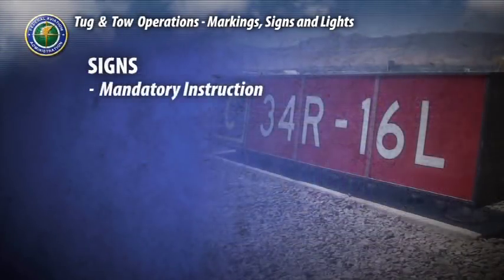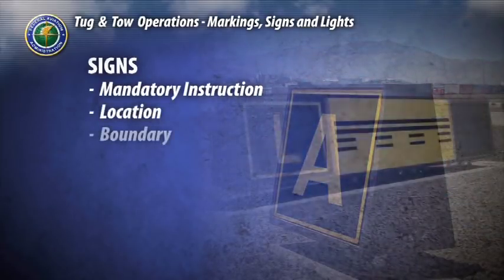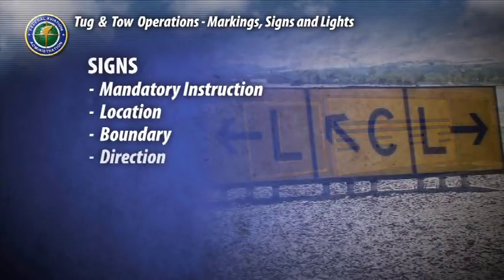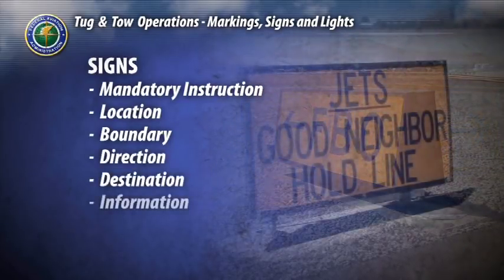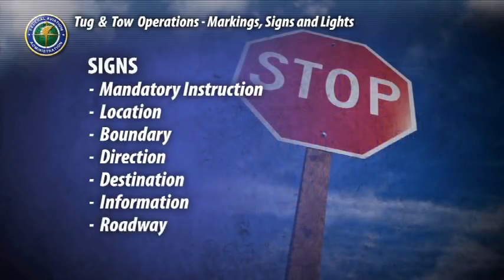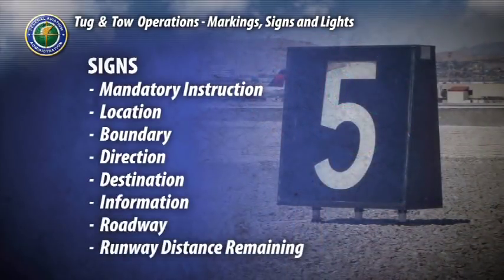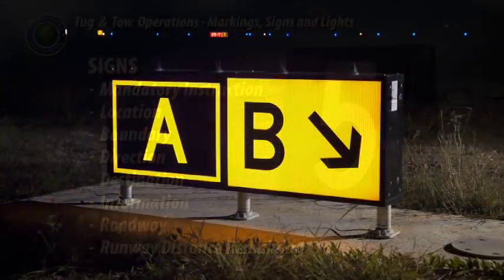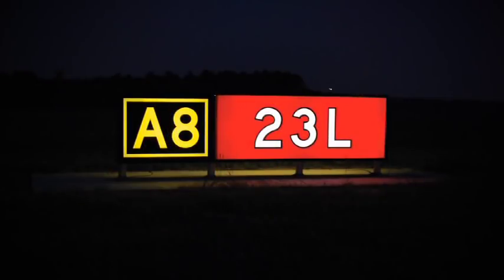There are eight main categories of sign types: mandatory instruction signs, location signs, boundary signs, direction signs, destination signs, information signs, roadway signs, and runway distance remaining signs. We'll examine the signs in each category you'll need to know.